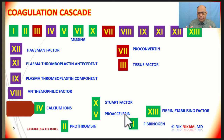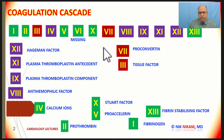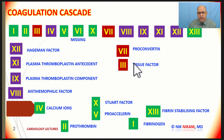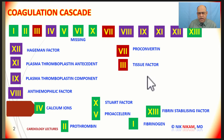You may be wondering how to make sense of this chart with 13 factors and how the coagulation cascade proceeds whenever there is injury to a blood vessel either inside or outside the body. First, let us look at the colors. The green color represents the common pathway, the purple color represents the intrinsic pathway, and the red or maroon represents the extrinsic pathway and the factors involved. It becomes very easy to understand once we proceed to the next slide.